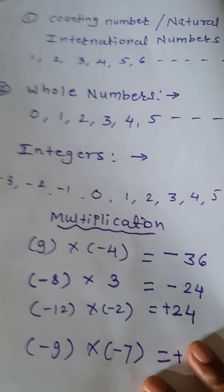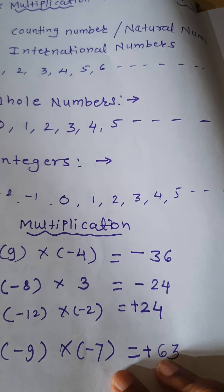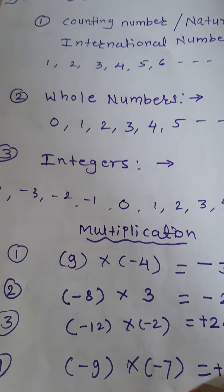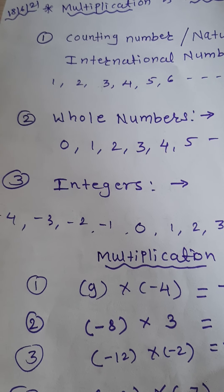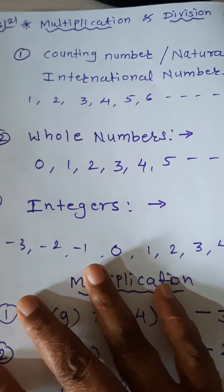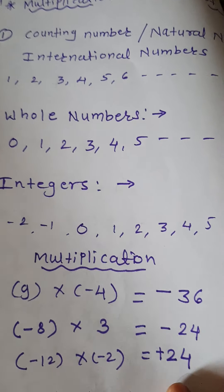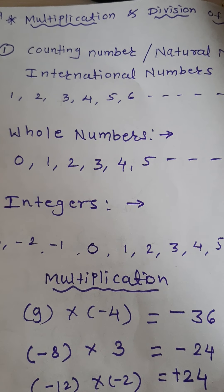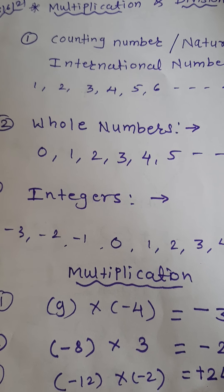Now I explain some groups of numbers. If I ask you to count different things, you take support of numbers like 1, 2, 3, 4, 5, 6 and so on. As these numbers are used for counting different things, they are called counting numbers as well as natural numbers. Sometimes we don't have anything — that time we need the number zero. If we add 0 to this group of natural numbers, a new group is formed called whole numbers: 0, 1, 2, 3, 4, 5 and so on. There are infinite numbers.